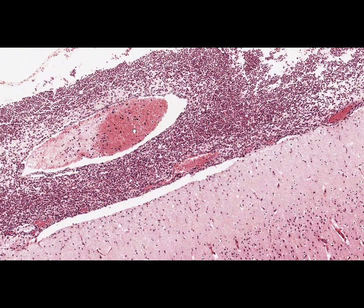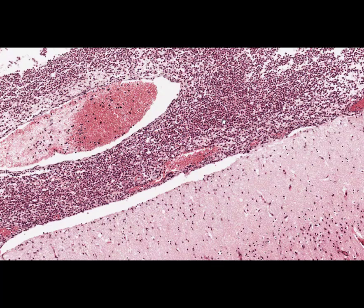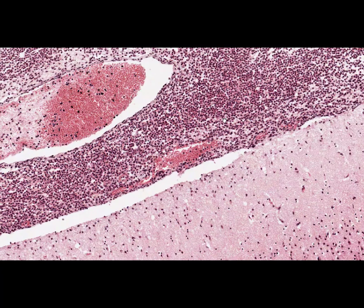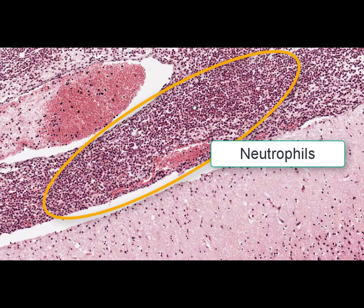Secondly, and which is the most important, the pia mater is edematous and thickened, as it is infiltrated by polymorphonuclear leukocytes — that is, neutrophils. Just due to the presence of a great amount of neutrophils, we define this inflammation as purulent.